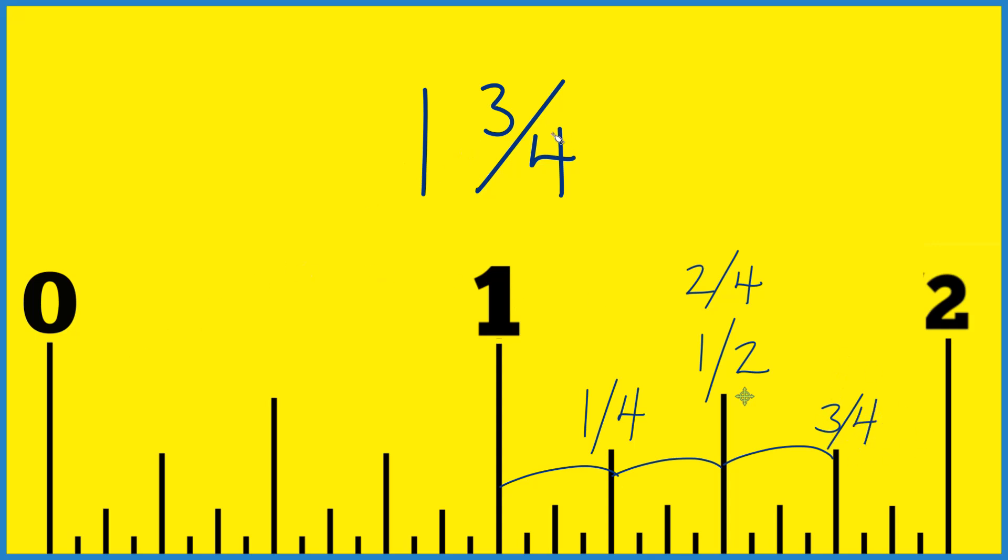So when we're looking for one and three quarters of an inch on a ruler or a tape measure, we go one inch. Then we go one fourth, two fourths right here, three quarters of an inch. This is one and three quarters of an inch. That's it.